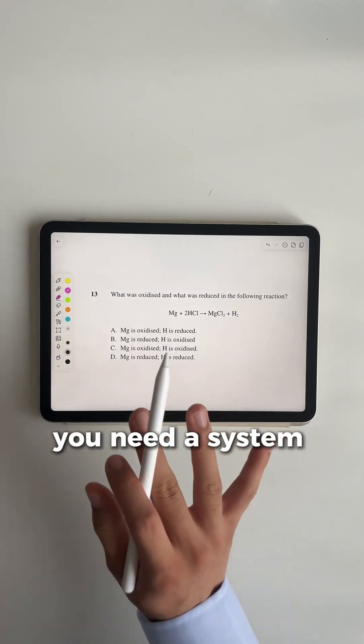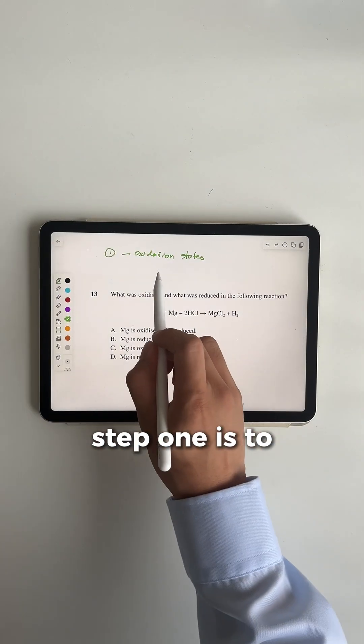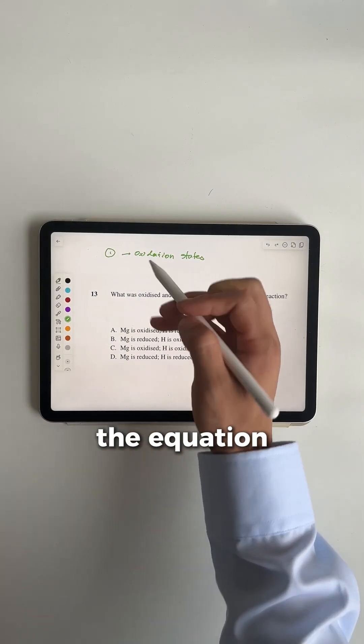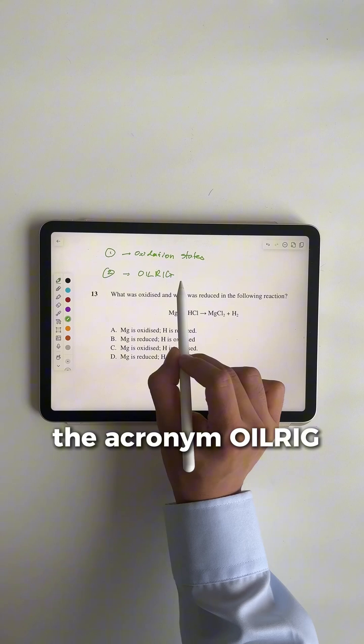To never make a silly mistake, you need a system to go through a question like this. Step one is to write the oxidation state to the equation. Step two is to remember the acronym OIL RIG.